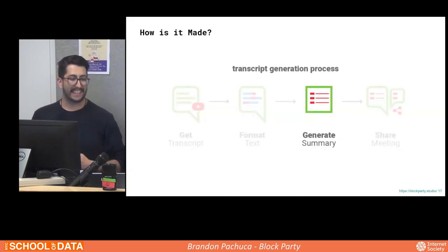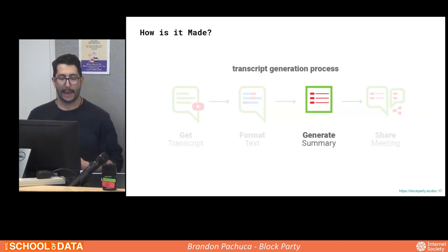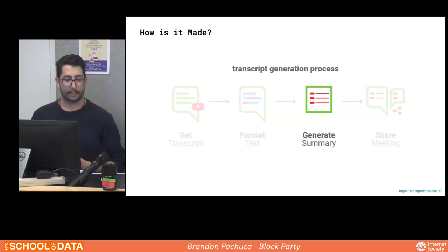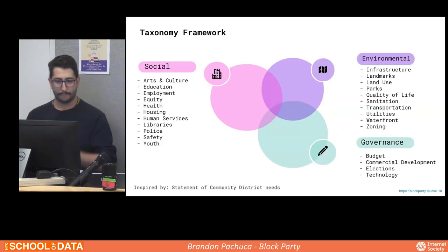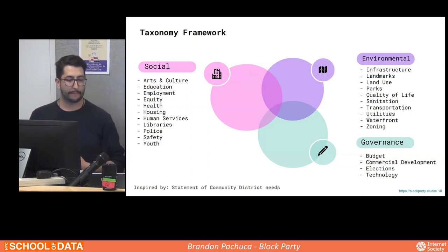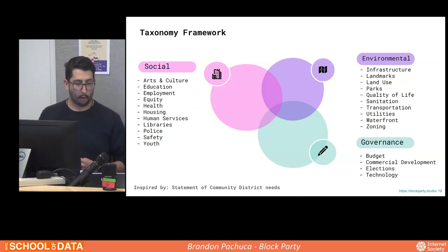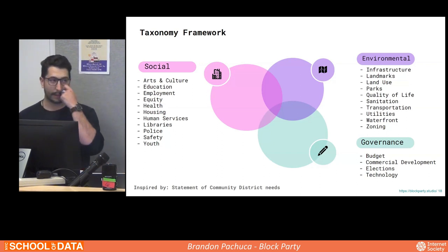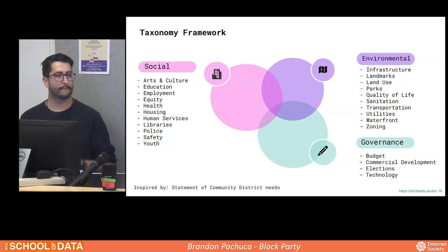Once we have a clean transcript, we create what we call meeting highlights. We use a concept called extractive summarization, where we identify the most representative sentences and construct a verbatim summary. We don't abstract what is said — we want to avoid sentences such as 'can you please mute yourself?' and instead focus on words such as education, vaccine, or housing. From these key terms, we structured what we call a taxonomy of topics, organized under categories relating to social, environmental, and governance. The taxonomy is also used to classify and tag each meeting, so if you're looking for a meeting on arts and culture, infrastructure, or budget, those tags help you query and find the information you're interested in.